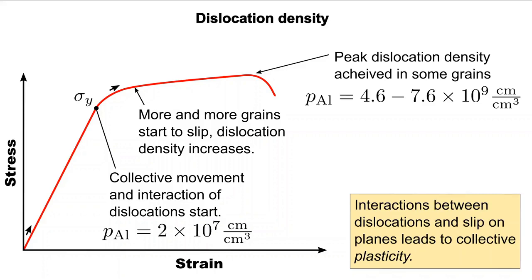It is the collective behavior of dislocation movement and slip on preferred planes, many times over, that produces plasticity. This plasticity is what we observe over distances measured by micron to millimeters and up.